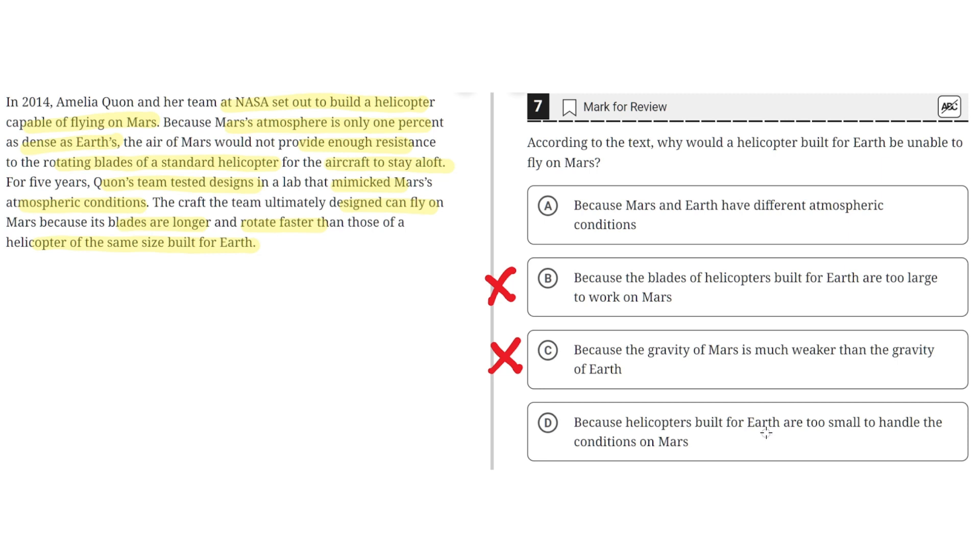D: Because helicopters built for Earth are too small to handle the conditions on Mars. This is incorrect because the text doesn't suggest that helicopters built on Earth are too small. So D is incorrect. The correct answer is A.